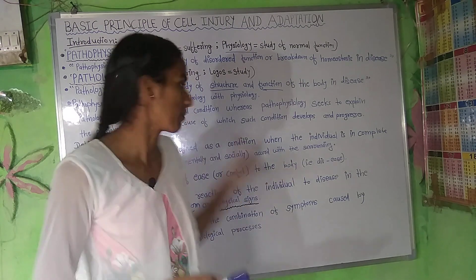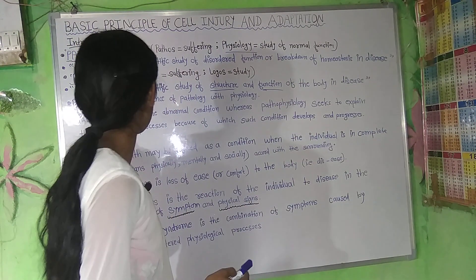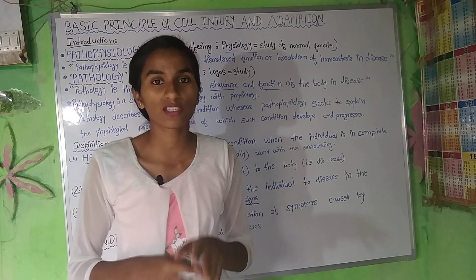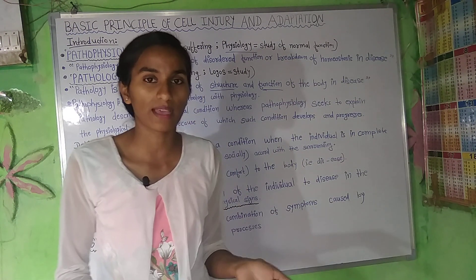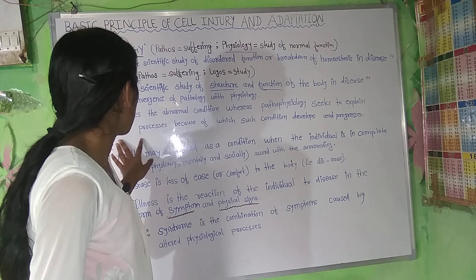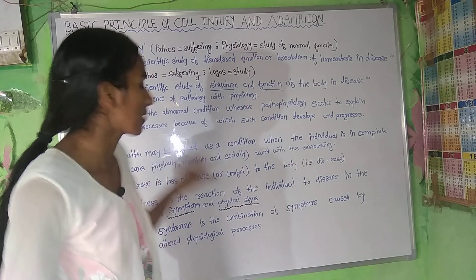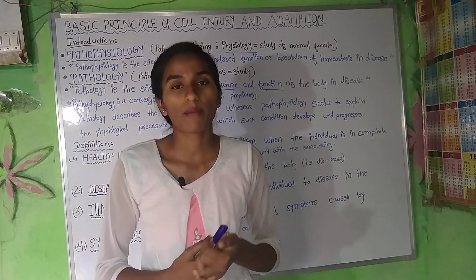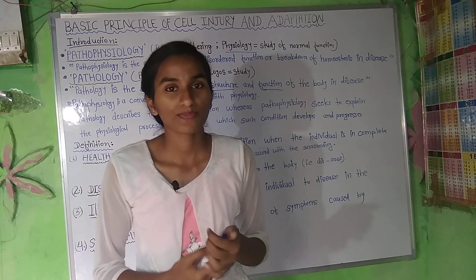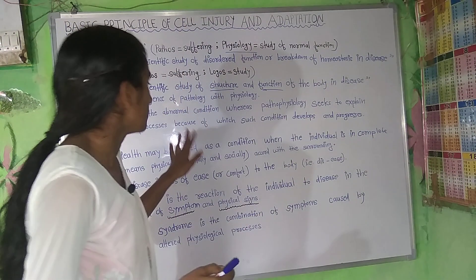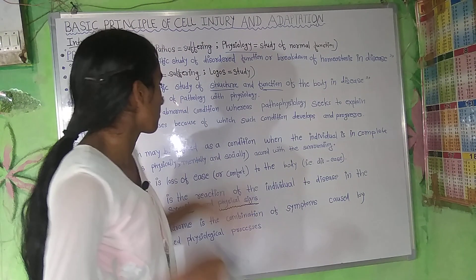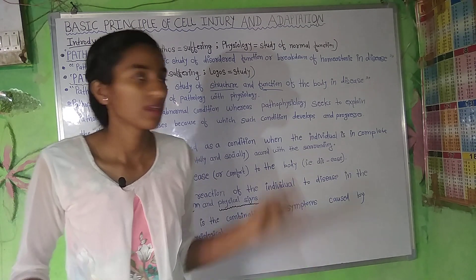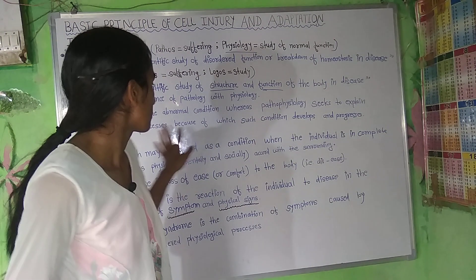Pathology explains what the conditions are in disease. In pathophysiology, we ask how the condition developed — how the body reached that state. For example, understanding how diabetes develops as a process is exactly what pathophysiology covers.